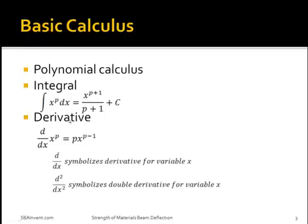A derivative, on the other hand, is the opposite of an integral. Basically, if you took an integral of a function and then took the derivative of that resulting function, you should get the function that you took the integral of originally. To take a derivative, you would again have x raised to some power p. Unlike with the integral, when you take a derivative, you subtract 1 from that power p, but you also multiply by that power p. So if you had x squared, to take the derivative, you would subtract 1 from 2 but also multiply by 2, so you would end up with 2x as the derivative of x squared.